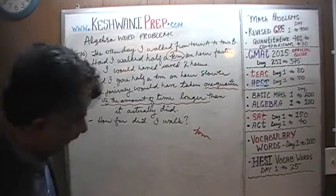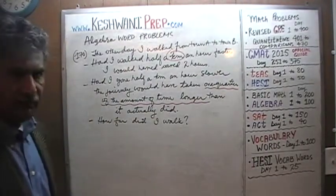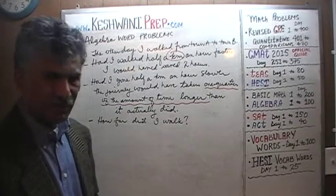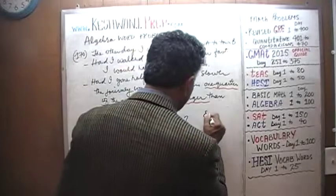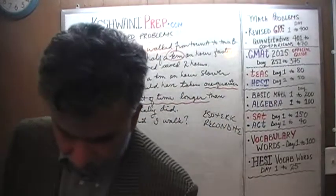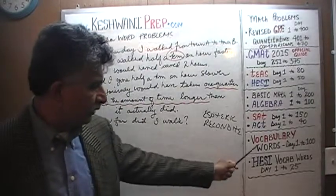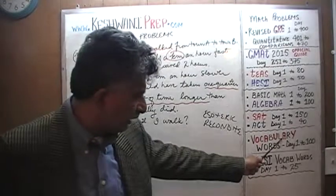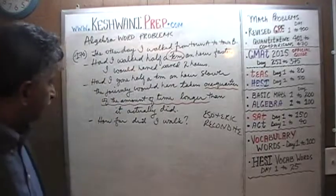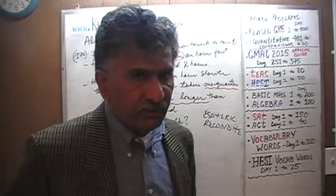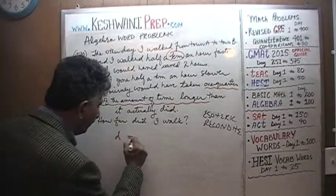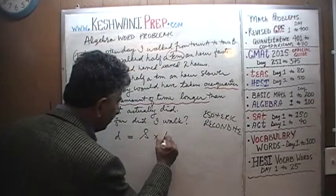The very first thing we need to understand here, before we do any work at all, is the very basic equation we'll have to use. I don't want to call it a formula because it sounds esoteric — it's something we do every day. The distance that we travel has to equal the speed at which we're going times the time — the number of hours.